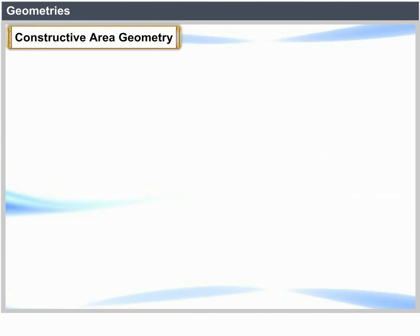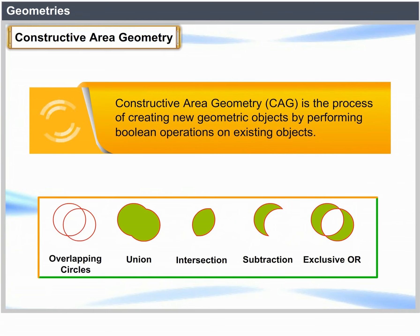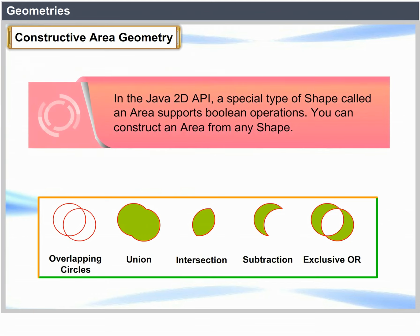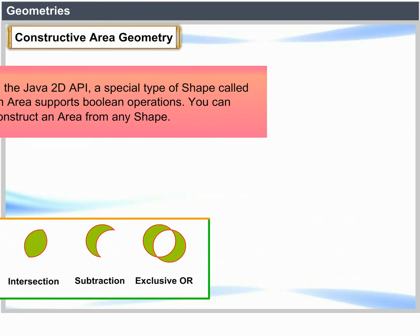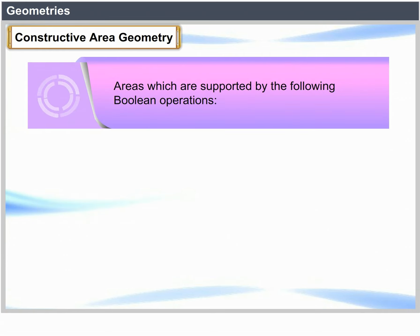Geometry Concept — Constructive Area Geometry: Constructive Area Geometry is the process of creating new geometric objects by performing Boolean operations on existing objects. In the Java2D API, a special type of shape called Area supports Boolean operations. You can construct an Area from any shape, and the supported Boolean operations are: